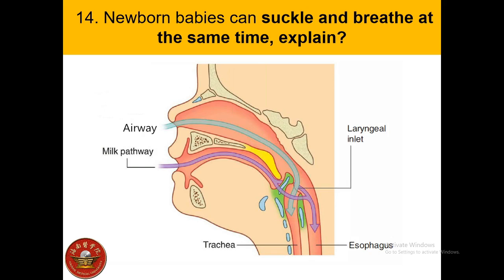Newborn babies can suckle and breathe at the same time. The reason is that in newborns, the larynx is higher in the neck and the epiglottis is above the soft palate, so they can eat and breathe simultaneously. This remains the case for about one year after birth.